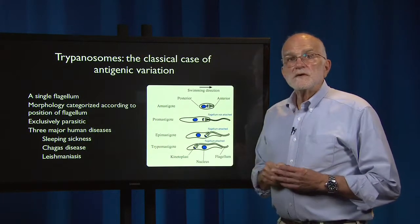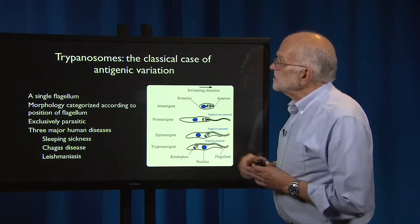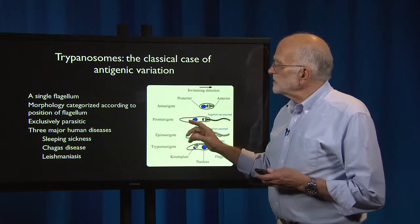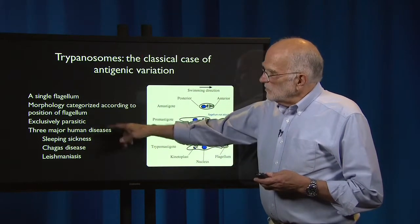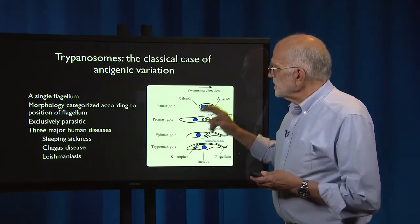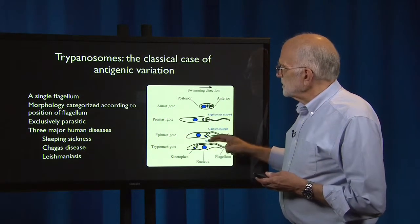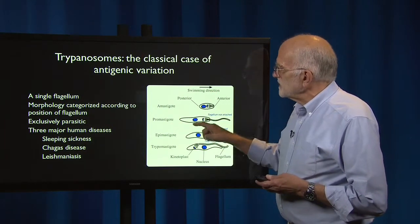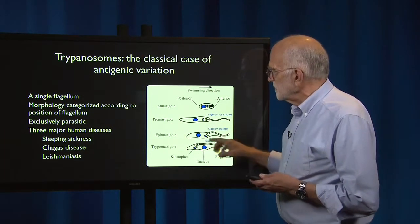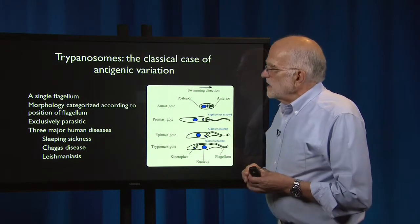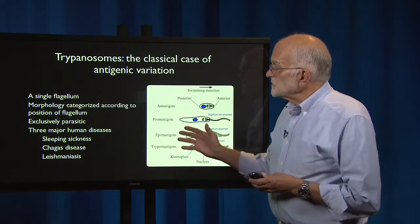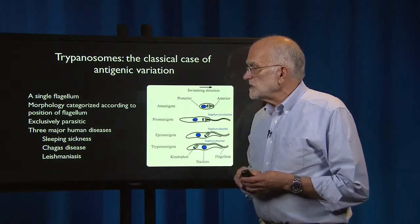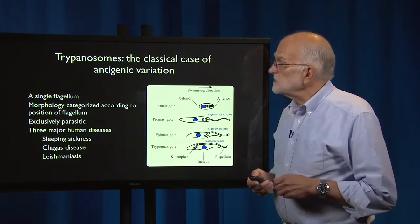Another case of varying surface proteins is done by the trypanosomes. Trypanosomes are eukaryotes with a single flagellum, and their morphology is categorized according to where the flagellum is attached — forms include amastigotes (which lack flagella), promastigotes, epimastigotes, and trypomastigotes. They are exclusively parasitic and cause three major human diseases: sleeping sickness, Chagas disease, and leishmaniasis — all pretty nasty diseases.